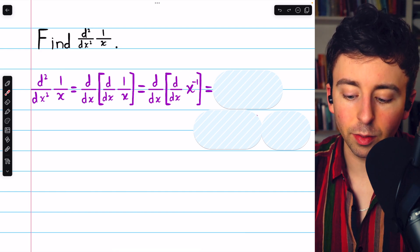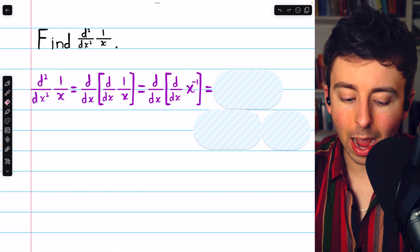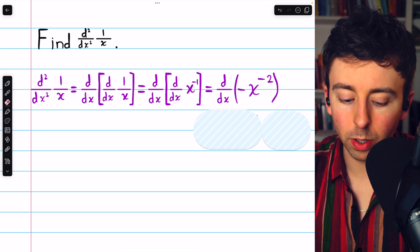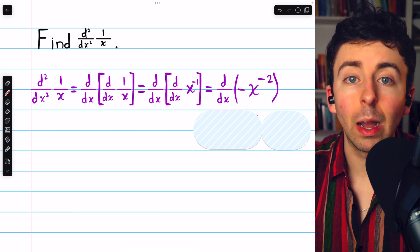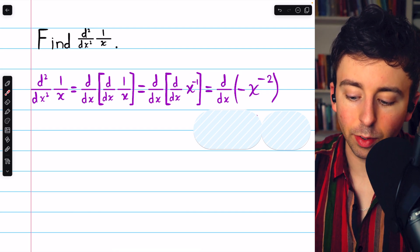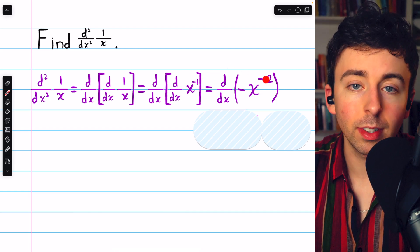Then, the derivative of x to the negative 1 is found by using the power rule. Bring the power of negative 1 down in front as a factor, and then reduce the power by 1. So, we have the negative in front, and then the power becomes negative 2.